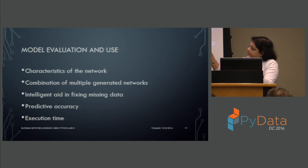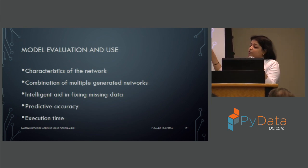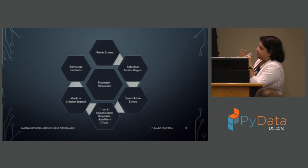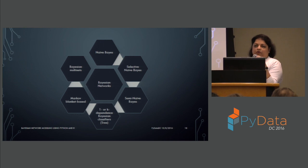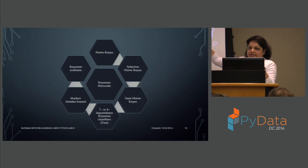Naive Bayes is the most commonly used Bayesian technique because it is the simplest — it doesn't involve the complexity of figuring out interconnections between attributes. You define whatever you want to predict as the parent node. It's much simpler than having to run through algorithms, figuring out how models are converging, and comparing different networks with different interconnections. Due to that simplicity, Naive Bayes is more commonly used.